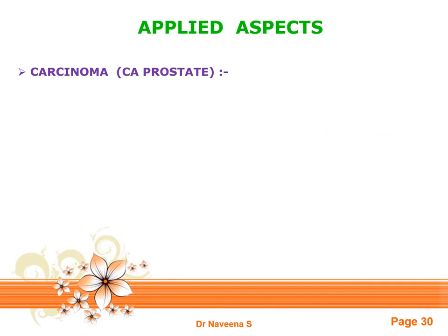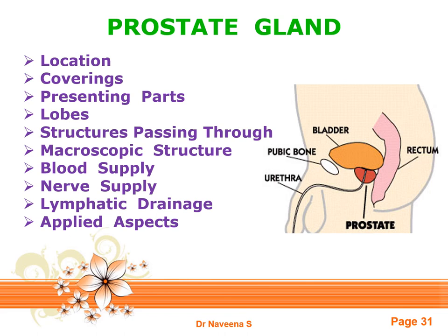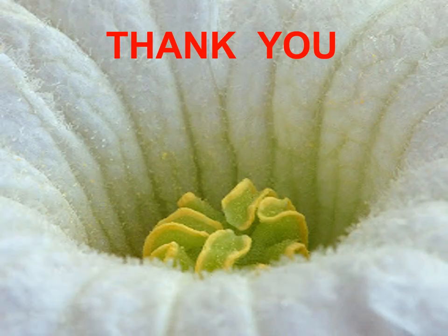Carcinoma of the prostate affects the outer zone of the prostatic parenchyma. Depending on the grade of the carcinoma, it can be treated by giving estrogen. It usually spreads through the venous and lymphatic drainage of the prostate gland. This concludes the video on gross anatomy of the prostate gland. Thank you for your patient listening — keep learning.